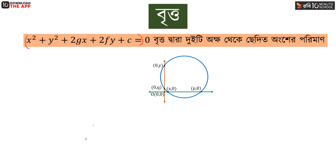The center of the circle is at minus g and minus f. So the center coordinates are minus g and minus f, which we can denote accordingly.